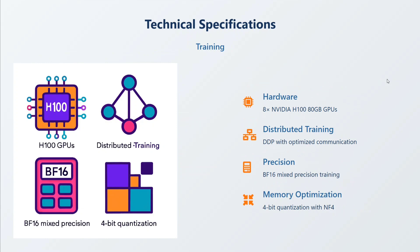Talking about how the model was trained: it was trained on eight NVIDIA H100 80GB GPUs with distributed training. Precision is BF16 mixed precision and memory optimization is 4-bit quantization. I won't go into detail since we've discussed these terms a lot in previous videos.